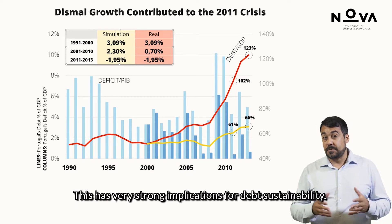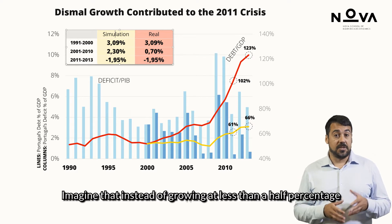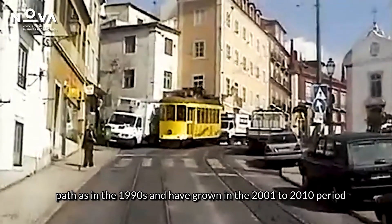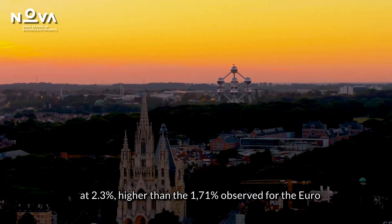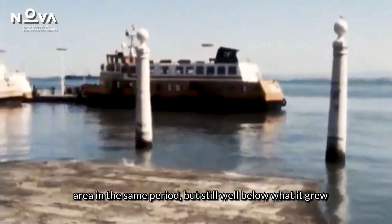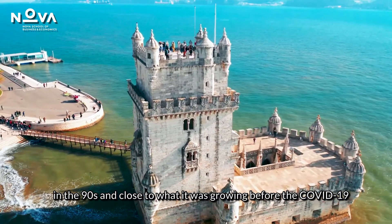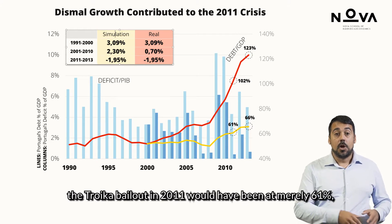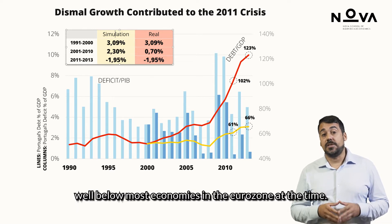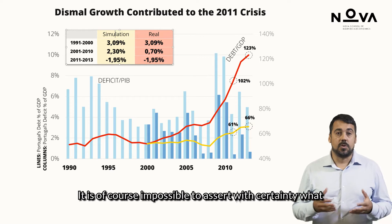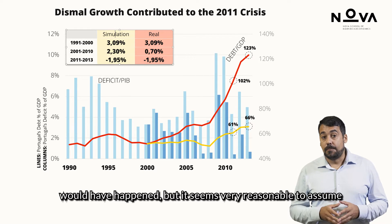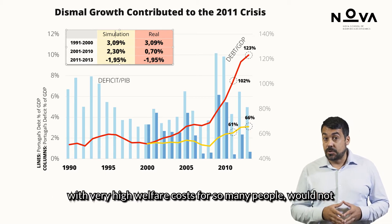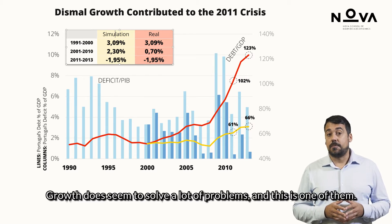This has very strong implications for debt sustainability. Imagine that instead of growing at less than half a percentage point, the Portuguese economy had continued its convergence path as in the 1990s and grown in the 2001–2010 period at 2.3% — higher than the 1.71% observed for the euro area but still well below what it grew in the 90s. Keeping the same debt path, the debt over GDP ratio at the time of the Troika bailout in 2011 would have been at nearly 61%, well below most economies in the eurozone. It seems very reasonable to assume that debt sustainability wouldn't have been an issue, and that all the draconian austerity measures with very high welfare costs for so many people would not have taken place. Growth does seem to solve a lot of problems, and this is one of them.